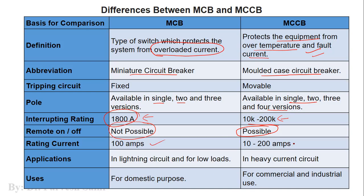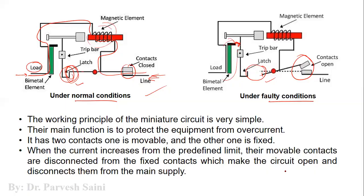Their ratings are quite different from one another. MCB is used for low voltage applications, generally at home. MCCB is not used in domestic applications — it is generally used in industrial applications or any application involving generating, transmitting, and distributing heavy electricity at high voltage and high current.